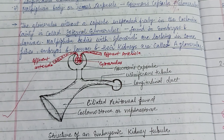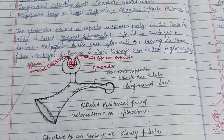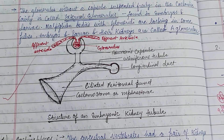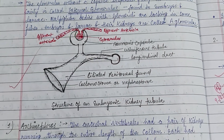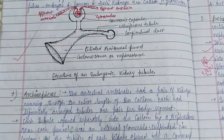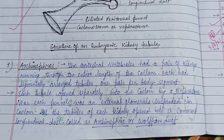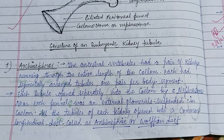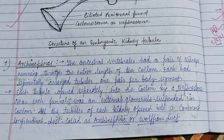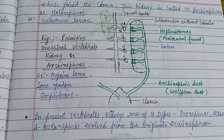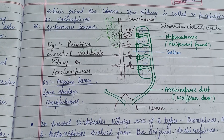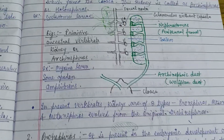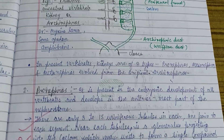The structure of the embryonic kidney tubules is present in almost all vertebrates. Starting from the archinephros — the ancestral vertebrates had a pair of kidneys running through the entire length of the coelom, and each had segmentally arranged tubules, one pair per body segment. An example of the archinephros kidney is the cyclostome larvae. Here is a picture of the archinephros.